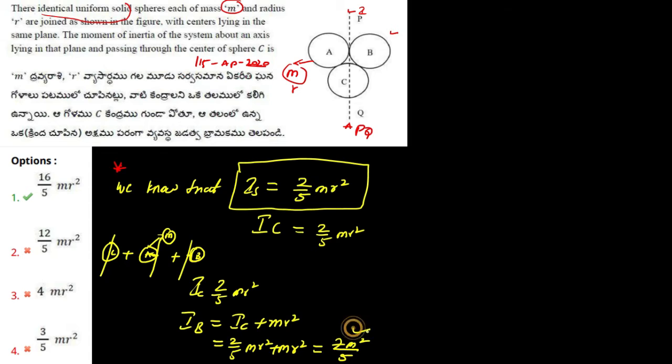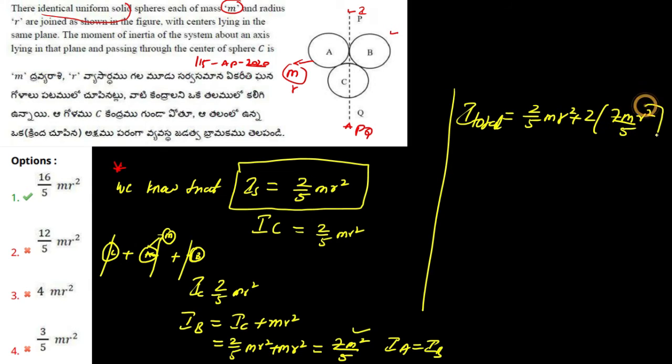Hope that is clear. I A will be equal to I B. So finally I total is equal to 2 upon 5 M R square plus 2 times 7 M R square upon 5. Hope that is clear.